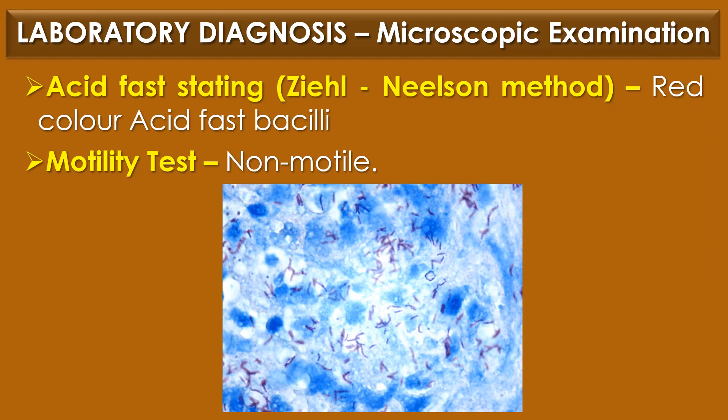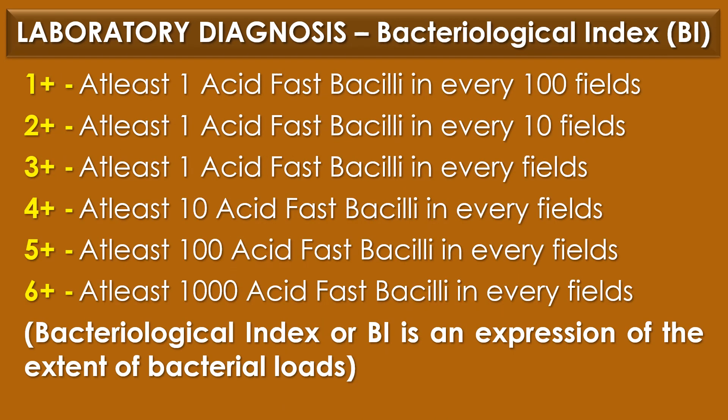Laboratory diagnosis of Mycobacterium leprae. The first diagnostic method is microscopic examination. Under acid-fast staining or Ziehl-Neelsen method, Mycobacterium leprae is observed as red-colored acid-fast bacilli. In motility tests, non-motile cells are observed. The bacteriological index is an expression of the extent of bacterial load, whereas the morphological index is calculated by counting the number of solid staining acid-fast rods.